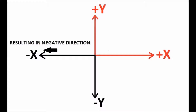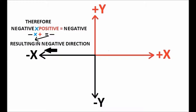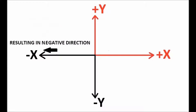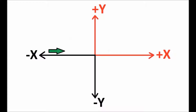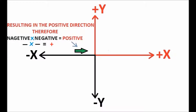Therefore, minus cross plus is equal to minus. When moving in the negative direction crossed with negative means reverse the direction, resulting in the positive direction. Therefore, minus cross minus is equal to plus.